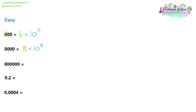Now let's look at the next number. Identify the first number in the question, which is an 8. We are going to be multiplying by 10. Let's see how many places we have after the 8: 1, 2, 3, 4, 5. So it'll be 8 times 10 to the power of 5.